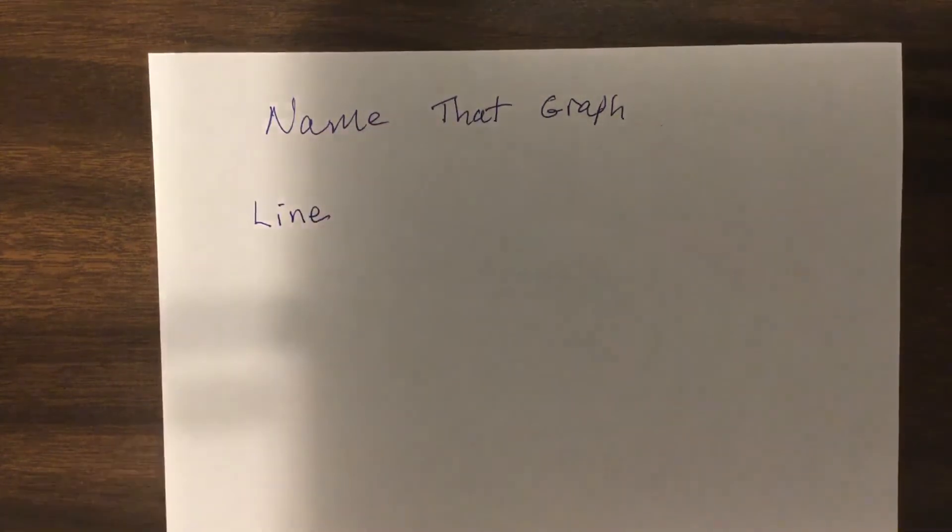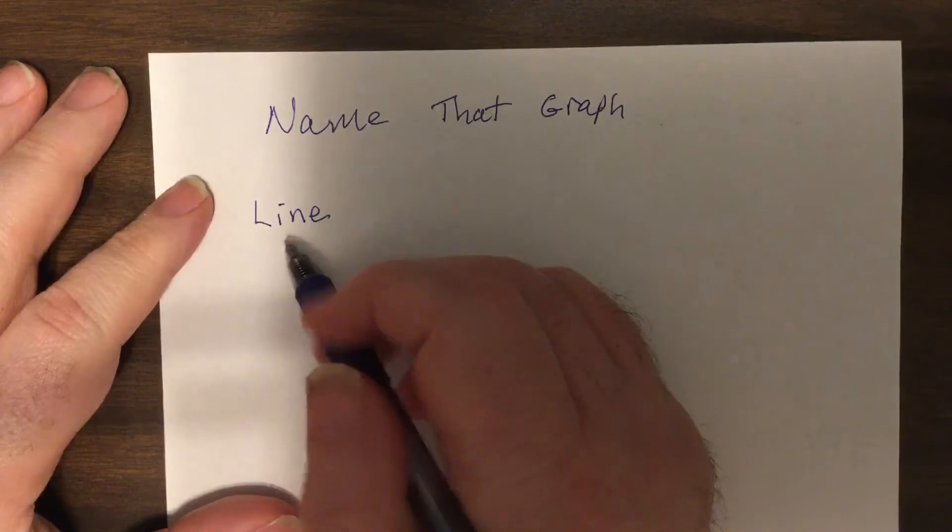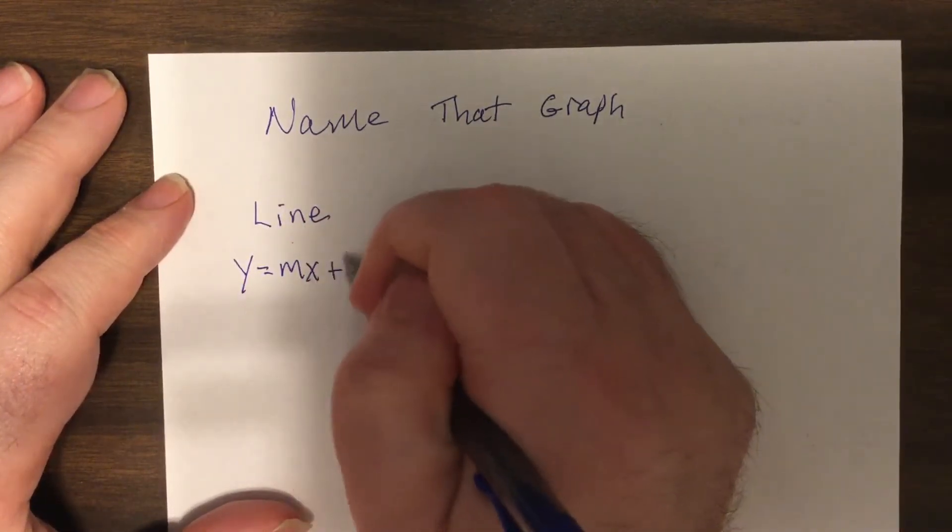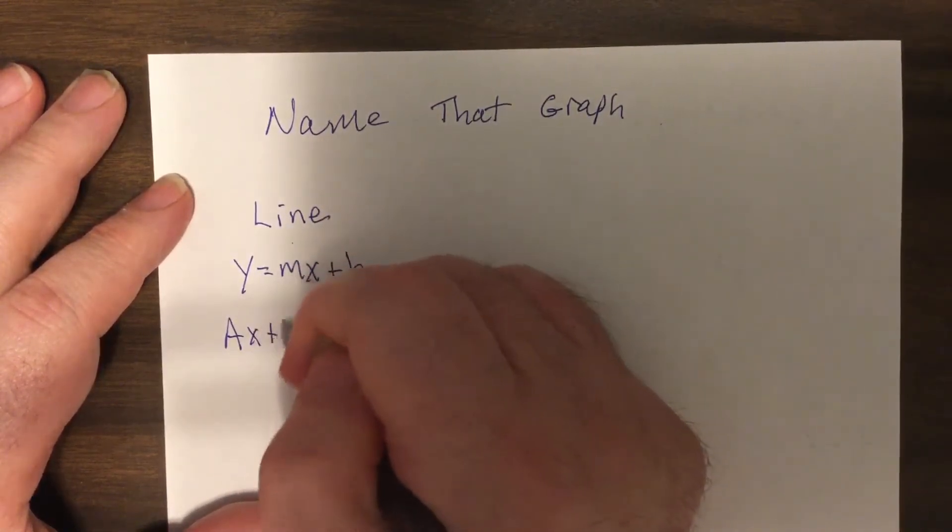You should be able to tell me what the graph would be just by looking at the equation. So what's true about a line? Well, a line usually comes two ways, slope intercept,